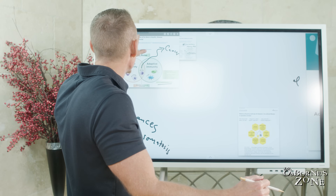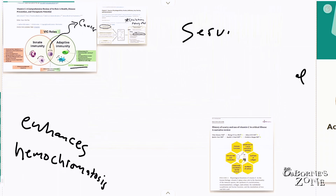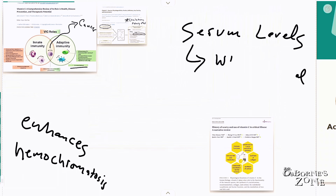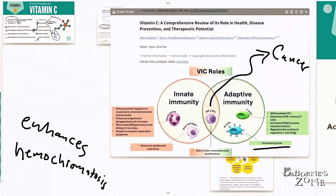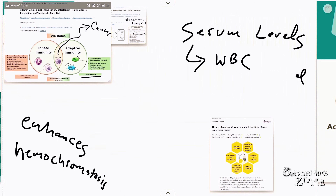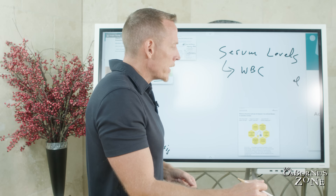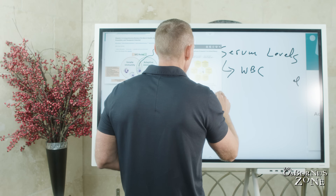One of the ways many doctors believe vitamin C should be measured is not in the serum. Serum levels are a simple blood test available through LabCorp or Quest, and they measure quantitatively how much ascorbic acid is floating around in your blood at any given moment. But many researchers believe it should be measured in the white blood cell, because vitamin C plays such a huge role in immune regulation. White blood cells also have a longer lifespan of about six months, making them a truer indicator of dietary uptake and overall storage status of vitamin C.